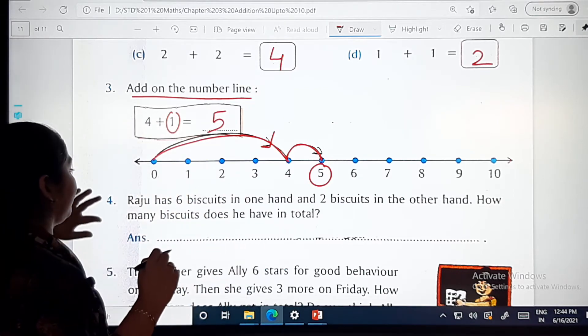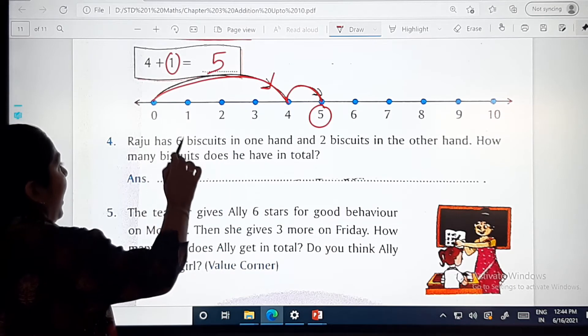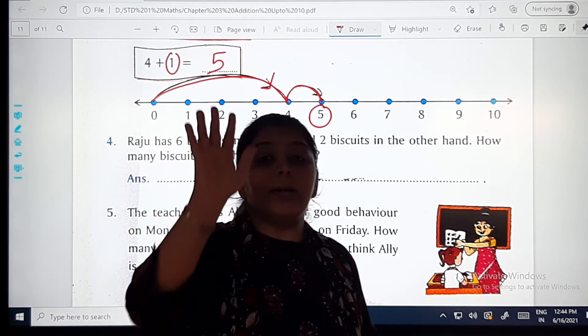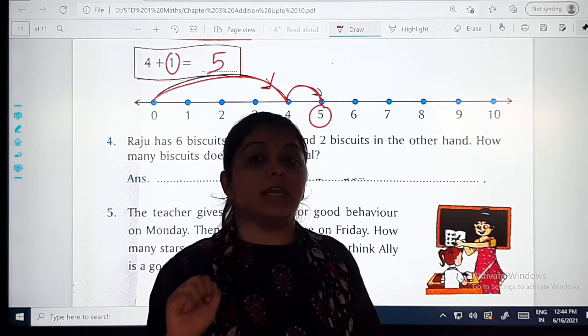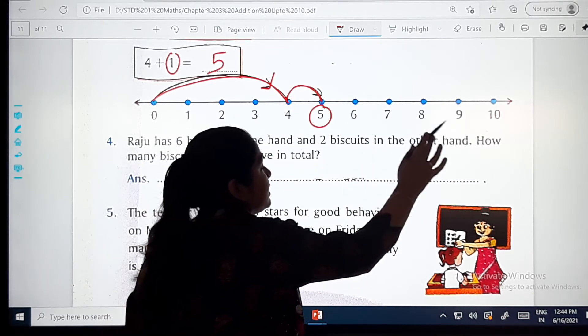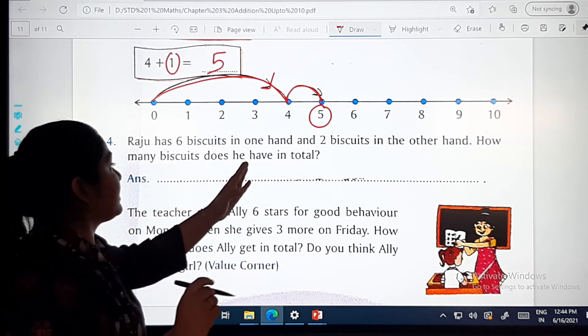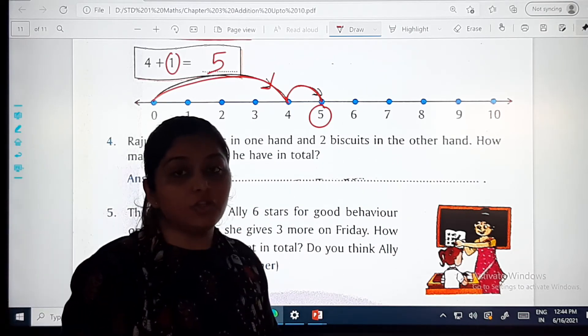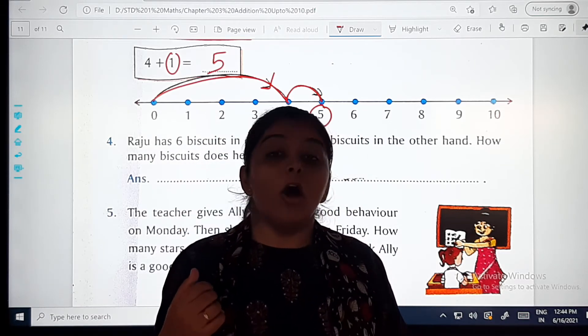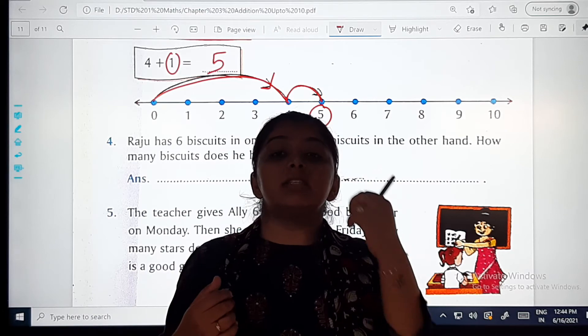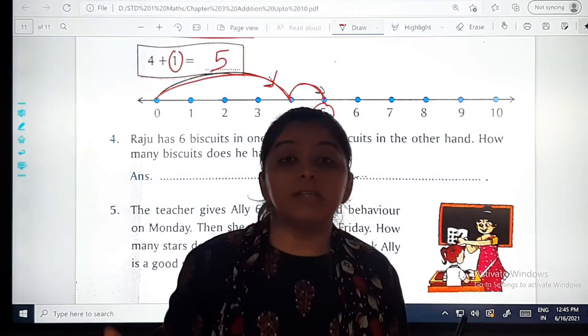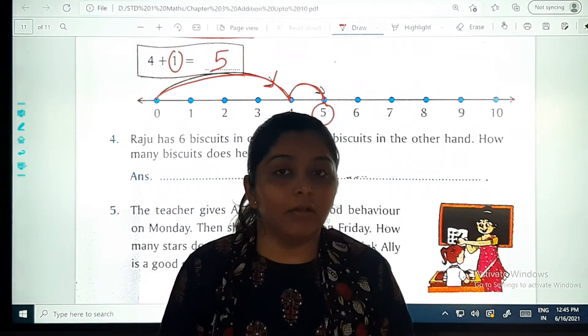Next. Raju has six biscuits in one hand. Raju ke paas ek hand mein kitne biscuits thay? Six. And two biscuits in the other hand. How many biscuits does he have in total? Pehle uske haath mein chay biscuits thay, aur uske dusre haath mein kitne biscuits thay? Do biscuits thay. Toh hum ko total biscuits batana hai kitne thay?